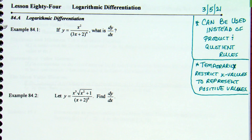Big thing: when the product or quotient rule could get extremely messy, logarithmic differentiation keeps it a little less messy. The answer still won't look pretty, but it keeps it a little less messy along the way. It makes it a little more doable.